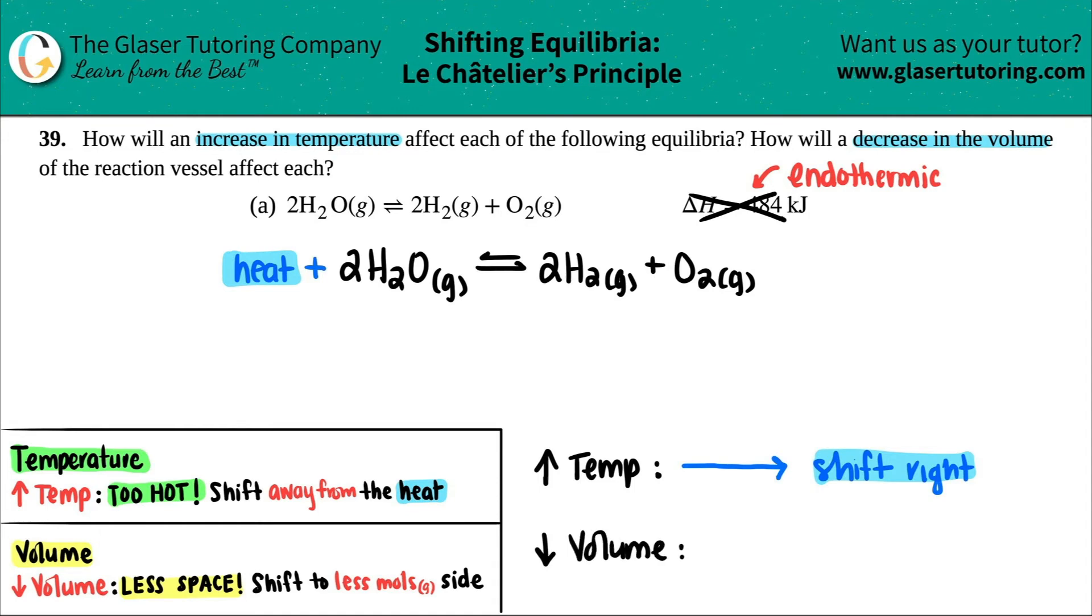Now they wanted us to know a decrease in the volume. Now remember, a volume is just the amount of space that something takes up. In this case, we have a reaction vessel. And Le Chatelier's principle says that if we decrease the volume, we have less space. That kind of makes sense. So if you have less space, you don't want a lot of things in that space.